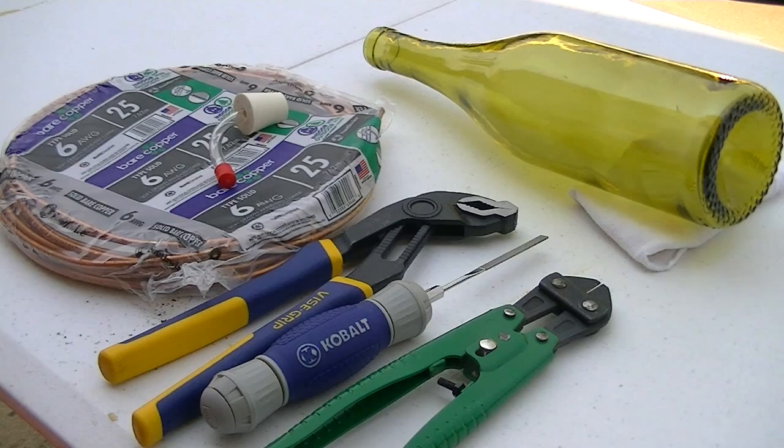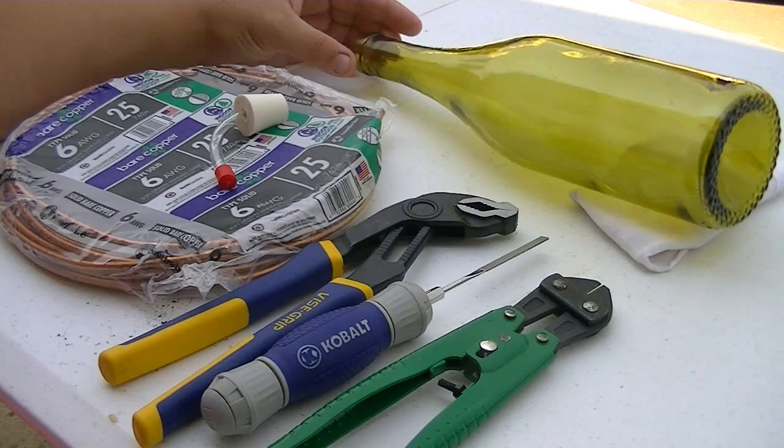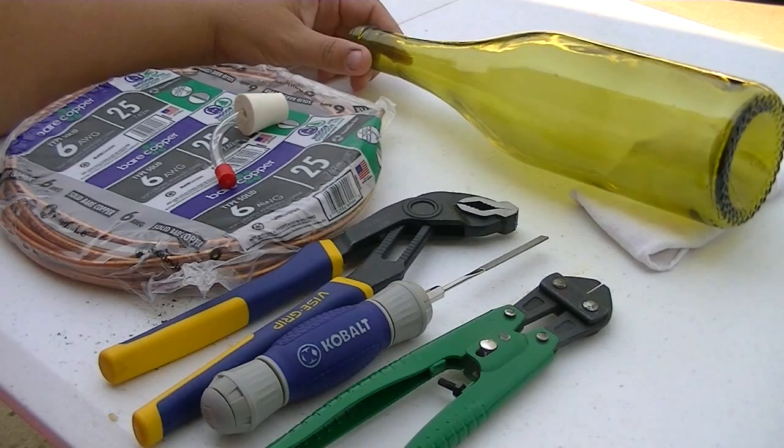You'll need a wine bottle or some other type of glass bottle. You can use a soda bottle. Anything that has a smaller neck area. And it doesn't have to be graduated like this. It could be a sharper crook neck. Just something that has a smaller neck with a larger body. And that's going to help us keep it in the cage that we're making for it.